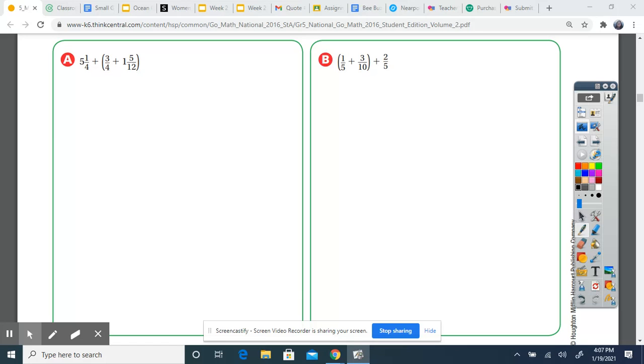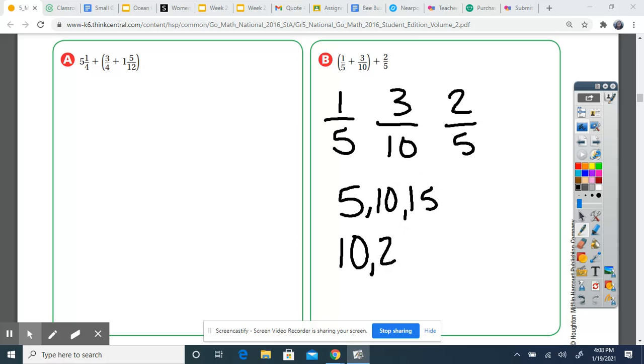So I've got one fifth, three tenths, and two fifths. I have two fifths, so I'm going to list my multiples for five. And I have one ten. So five, ten, fifteen... ten, twenty. My lowest number that I have in common is ten.